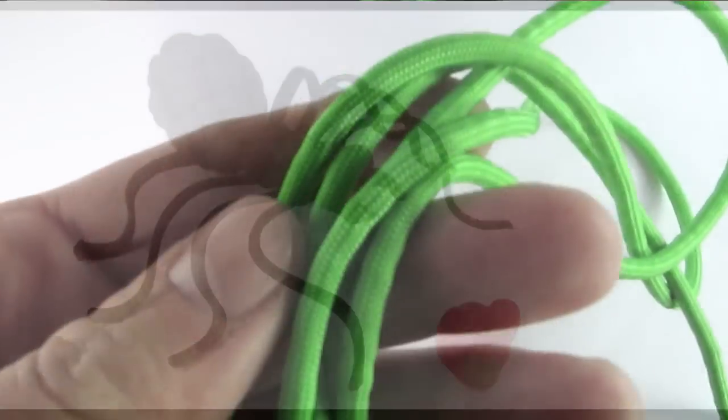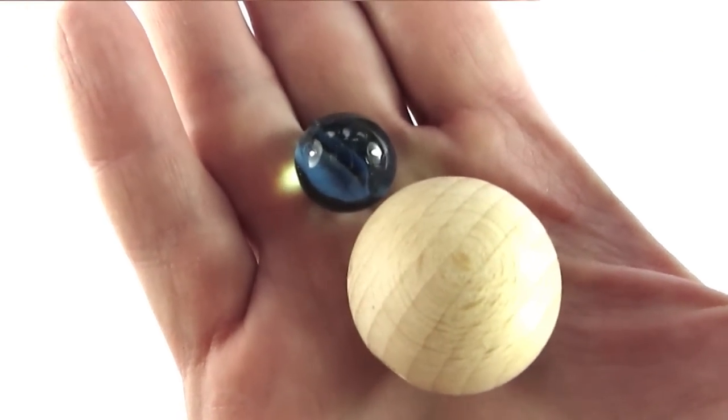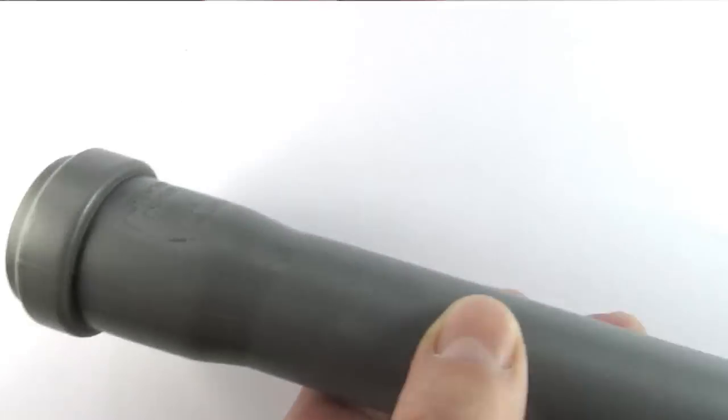To tie this knot you're going to need some paracord, a core—I'm going to use a marble—and a PVC pipe or a mandrel in order to tie the knot onto.